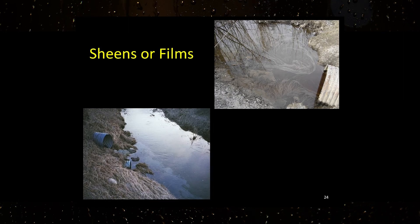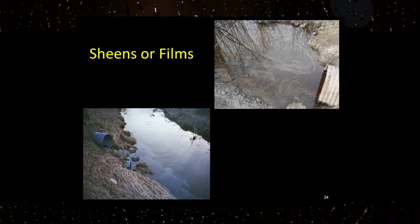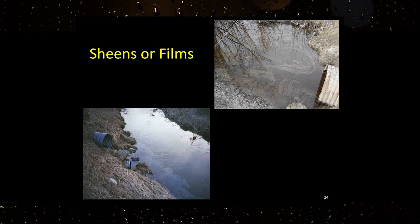Oil Films: Oil films or sheens in the receiving waters as a result of the discharge are a violation of the narrative standard. It is important to note that sheens can be caused by petroleum products or bacteria. Bacterial sheens differ from petroleum sheens as they will break into fragments when disturbed. Any sheen must be noted during the visual assessment.